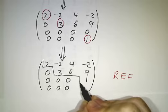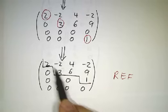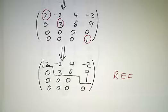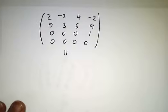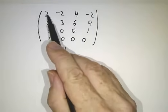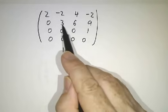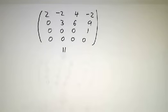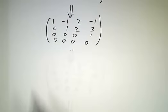Now we have our matrix in row echelon form — here's the staircase, going one step to the right, then two steps to the right. But it's not yet in reduced row echelon form. To get there, we want to make the pivots equal to one, so we rescale our rows: divide the first row by two, and divide the second row by three, leaving the third and fourth rows alone. Now we've got our pivots equal to one.